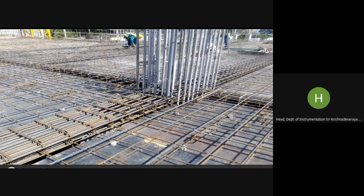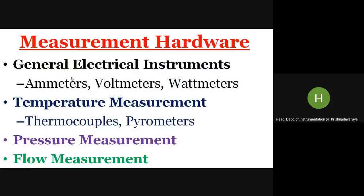The measurement hardware used generally includes electrical instruments such as ammeters, voltmeters, and wattmeters. In the electric arc furnace, you are measuring at 11 kV and 10,000 amps — a very different scale from laboratory milliamps and microamps. Voltmeters here measure in kilovolts and wattmeters in kilowatts. Temperature measurement is done primarily through pyrometers and thermocouples, and pressure measurement is also employed.